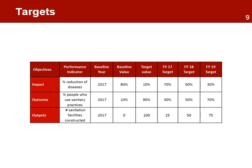Targets are the expected value the indicator should reach by a specific date. Some projects can break down the targets by year to report on the progress made. For example, a three-year project may have three targets, one for each year of the project.